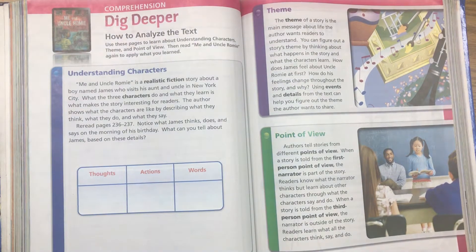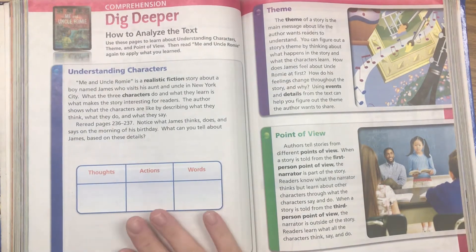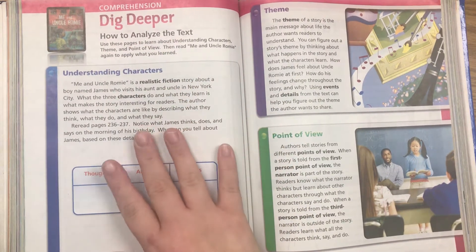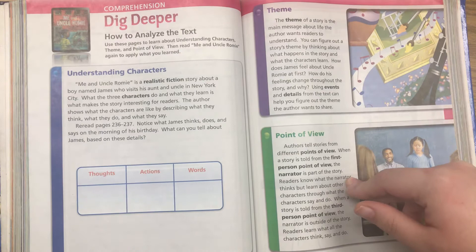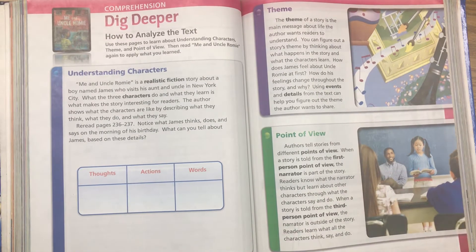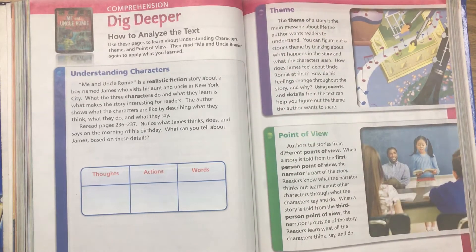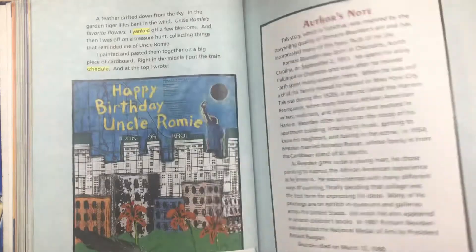All right, today we are talking about our story 'Me and Uncle Rami' and our skill this week was to work with understanding characters. I am going to read this and this is going to be our active reading activity for the day, but I wanted to review a couple other things that we've talked about so far this year. This is on page 244 and 245 in your reading book, which you can get on Think Central through the story 'Rami and Me' — it's literally the page after the end of the story.